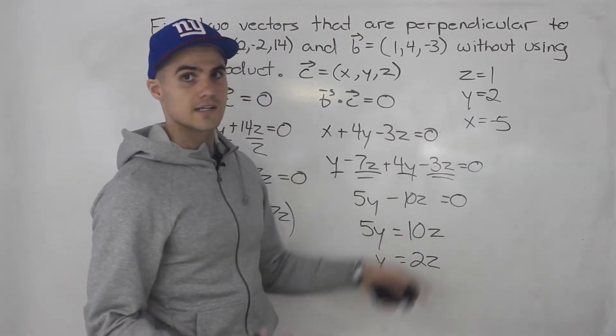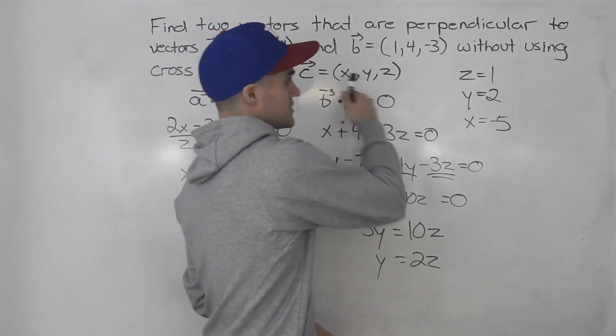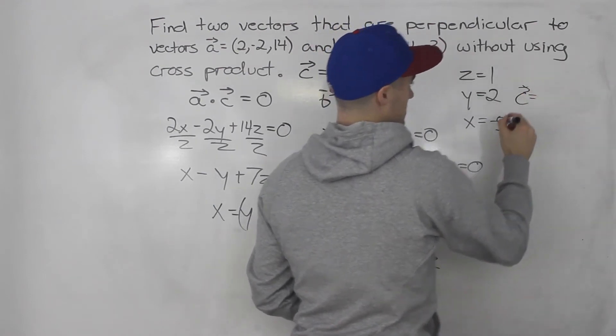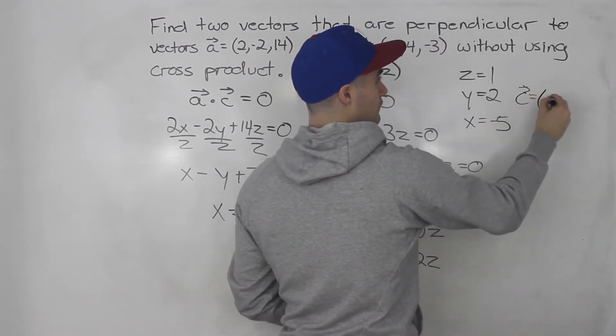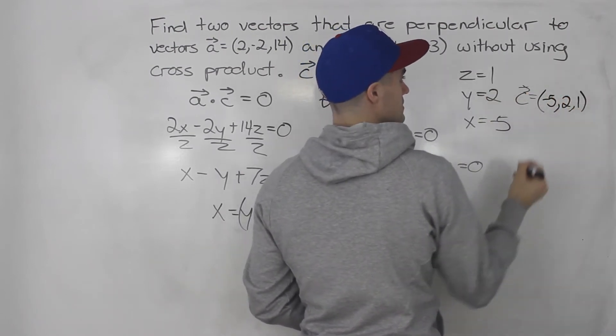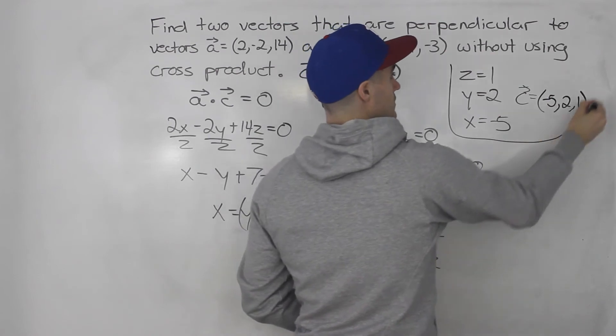So right there is a case for vector C. That would be perpendicular to both A and B. So C would be the components negative 5, Y is 2, Z is 1. So that there is one case.